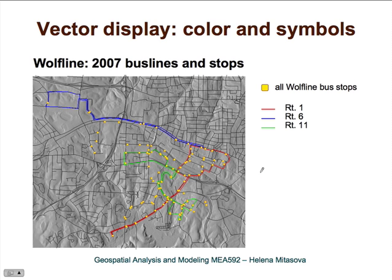Here is a simple example of vector data display: streets and bus lines as line data, and bus stops as point data. Very simple. Usually vector data are displayed in much more complex ways, but for data analysis this may be enough.